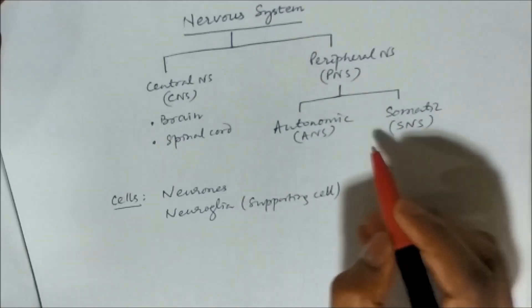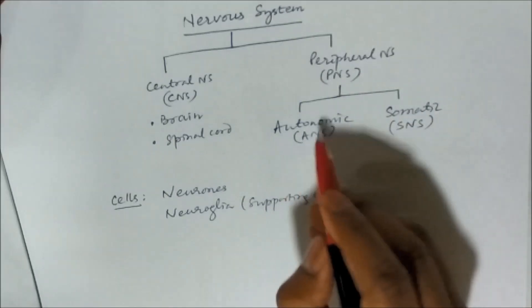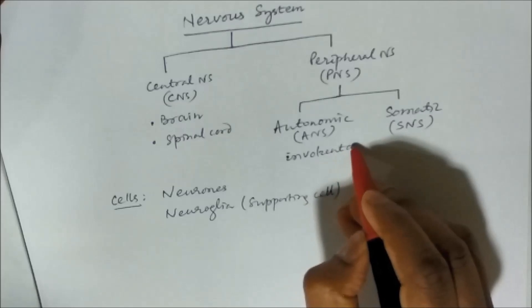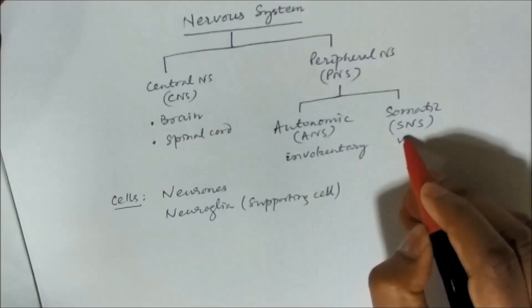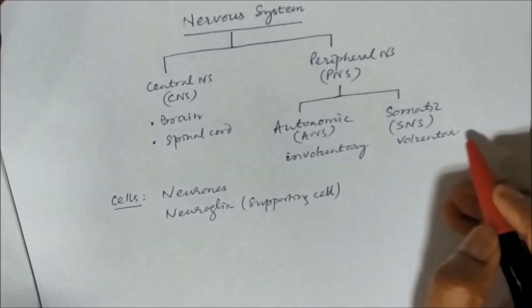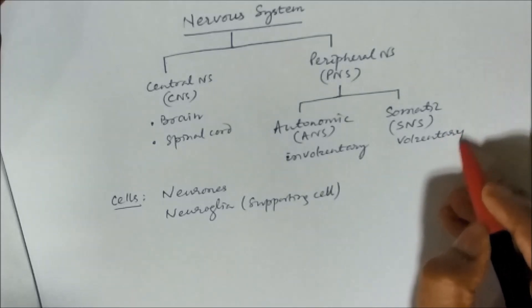And this is differentiated on the basis that Autonomic is Involuntary, that is without our control, and Somatic is Voluntary, it is under our Conscious Control.